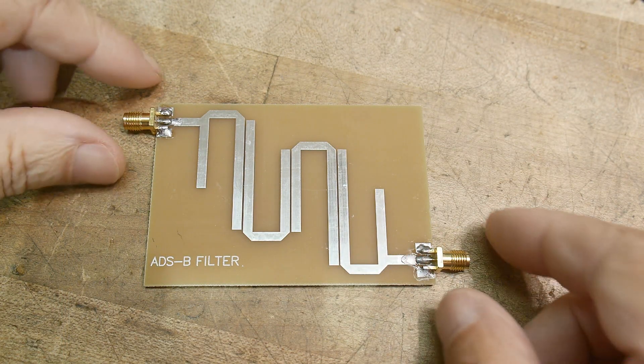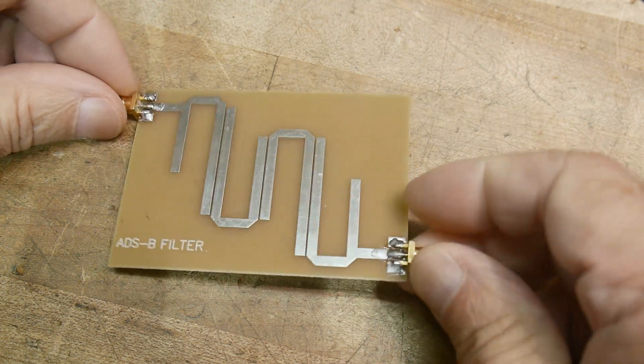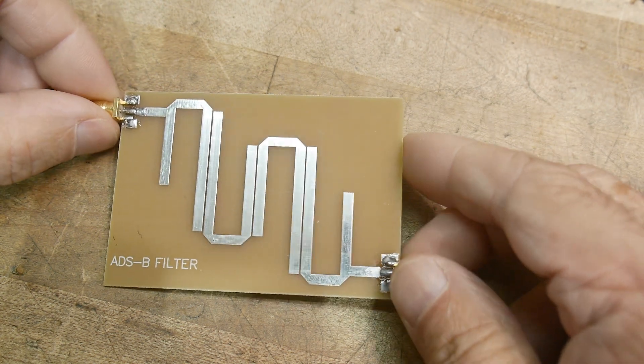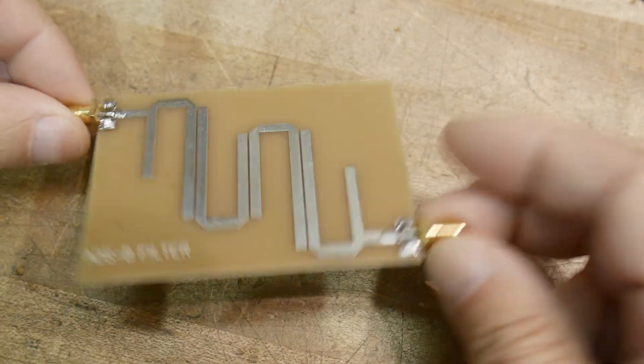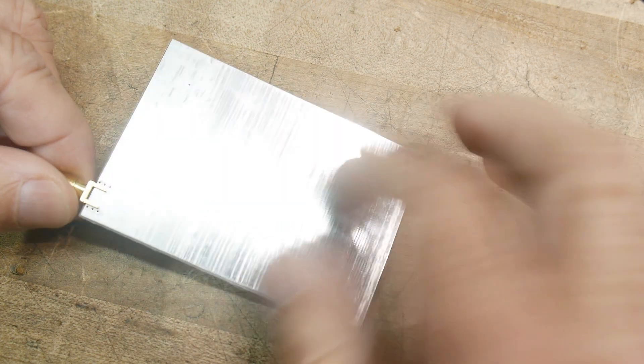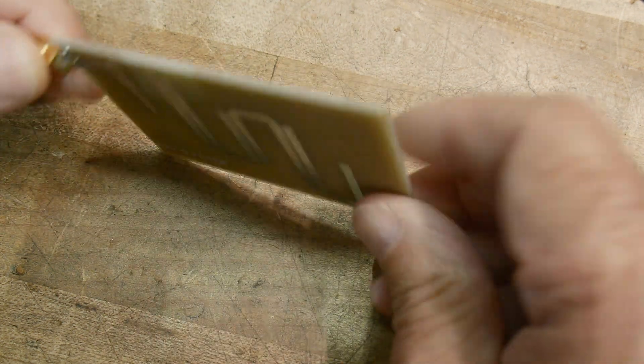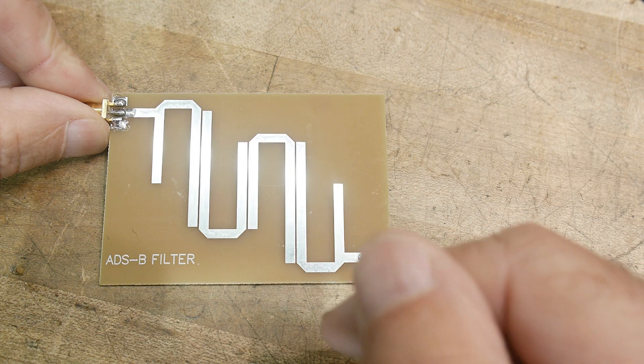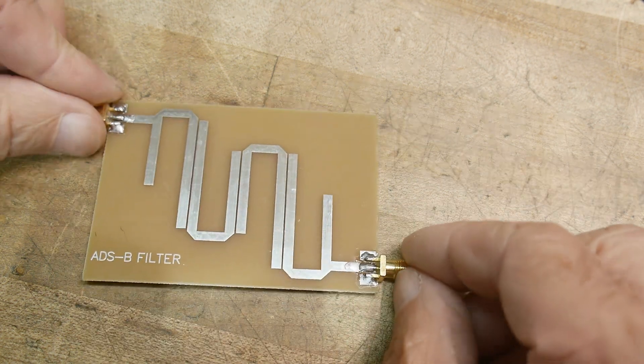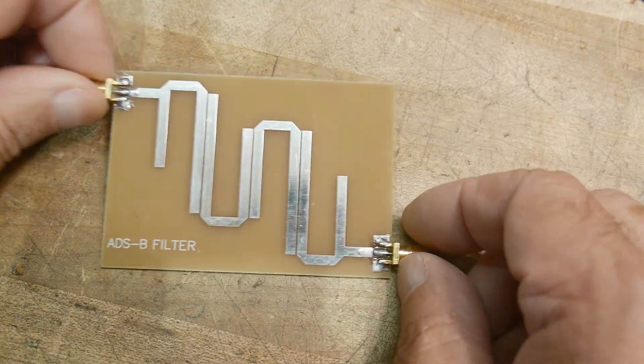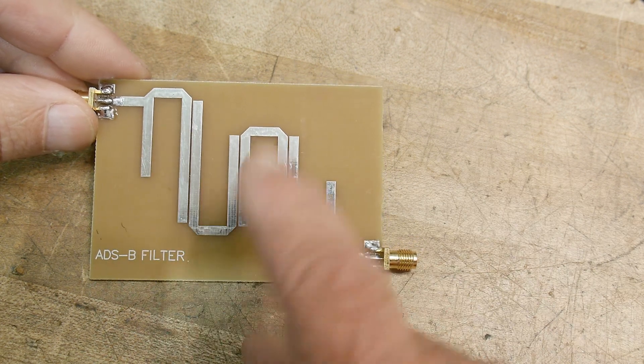I found this filter somewhere on Alibaba, maybe. I don't remember, it was super cheap so I bought it. It's a PC board filter with a ground plane on the bottom, so it's microstrip design and it has two SMA connectors.